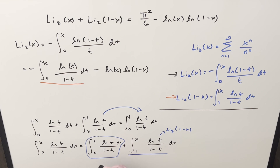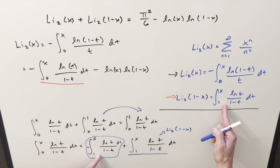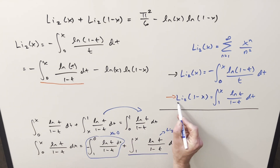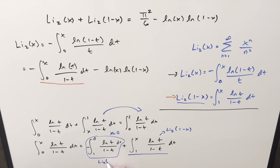On this one, flip the bounds so we're going from 1 to 0 and bring a minus out front. Now this is in exactly the same form, with lower bound 1 and x-value equal to 0. So looking at the left side of the equation when x is 0, this becomes just Li₂(1), and we get a minus sign out front.